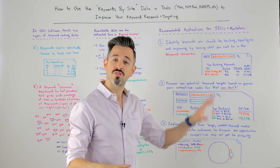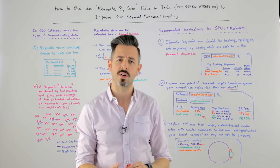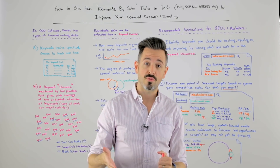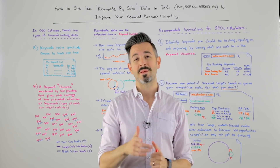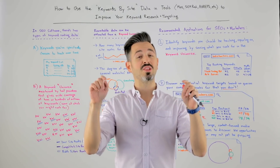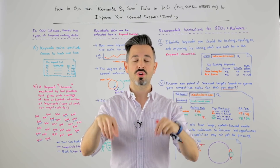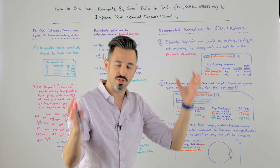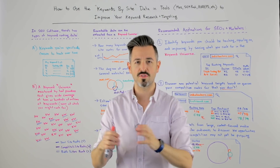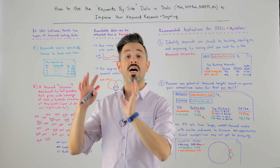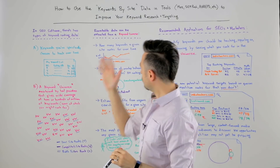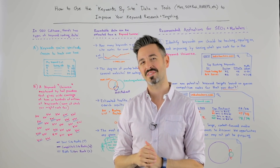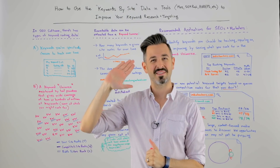In addition to these, there are a ton of other uses, and we'll be talking more about them here on Whiteboard Friday and on the Moz blog. For now, I'd love to hear your uses for tools like SEMrush, the Ahrefs Keyword Universe feature, and Moz's Keyword Universe feature, which is called Keywords by Site. Hopefully we'll see you again next week for another edition of Whiteboard Friday. Take care.